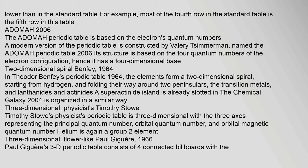In Theodore Benfey's periodic table of 1964, the elements form a two-dimensional spiral starting from hydrogen, folding their way around two peninsulas — the transition metals, and the lanthanides and actinides. A superactinide island is already slotted in. The Chemical Galaxy (2004) is organized in a similar way.